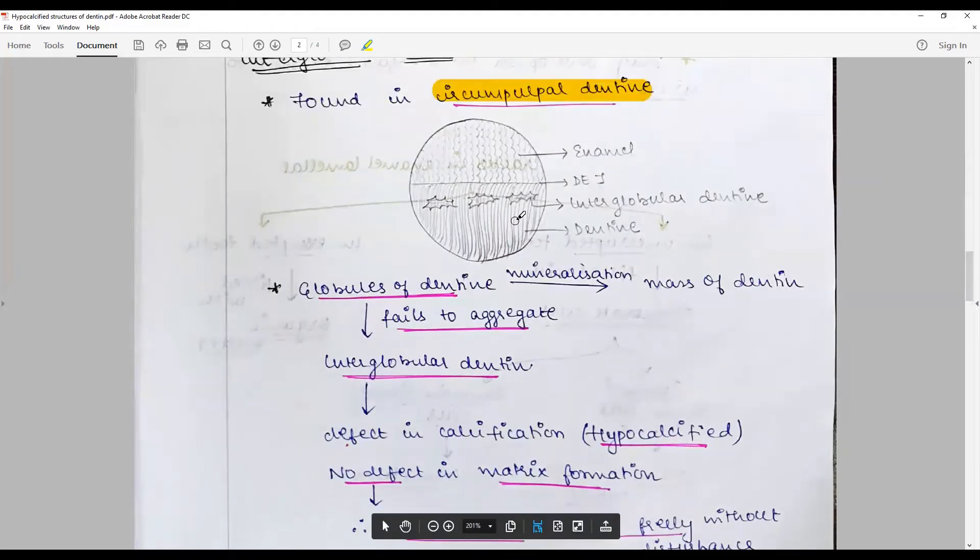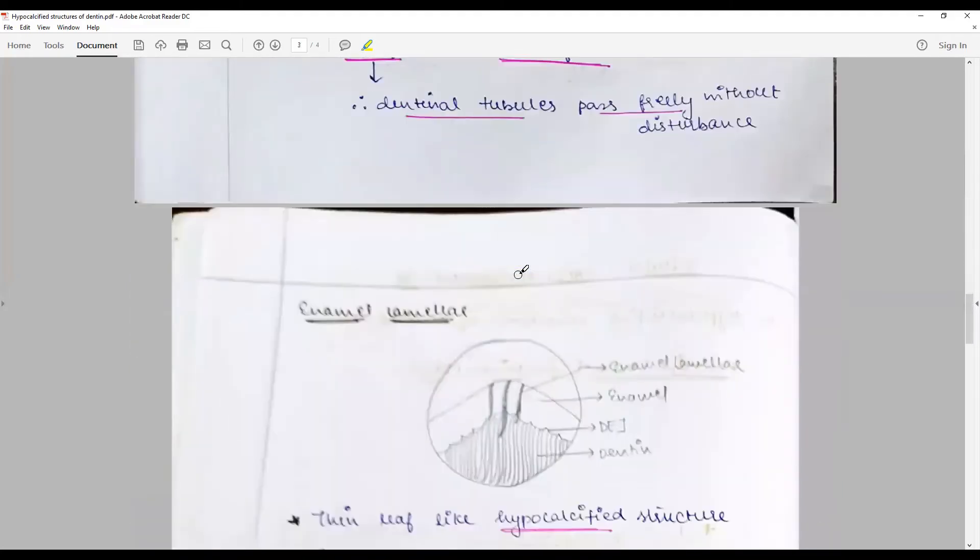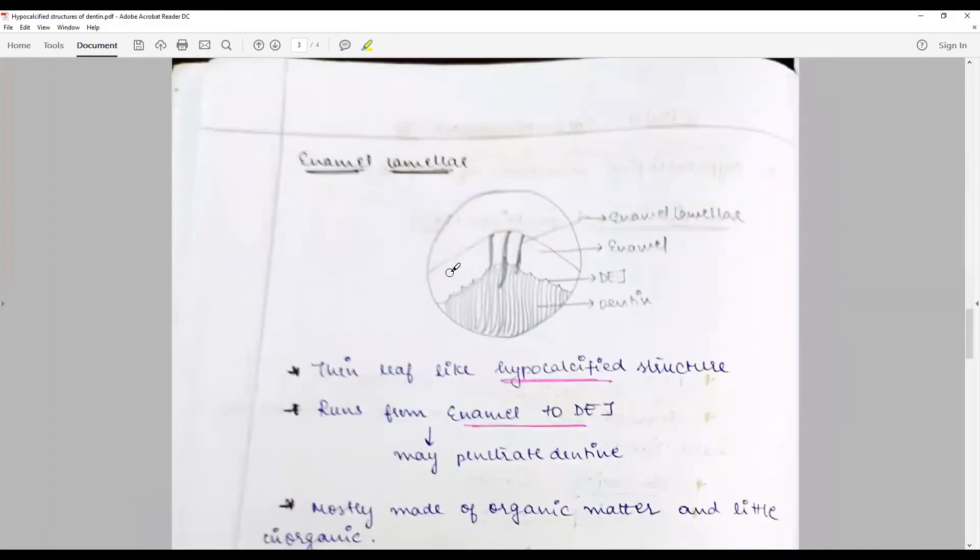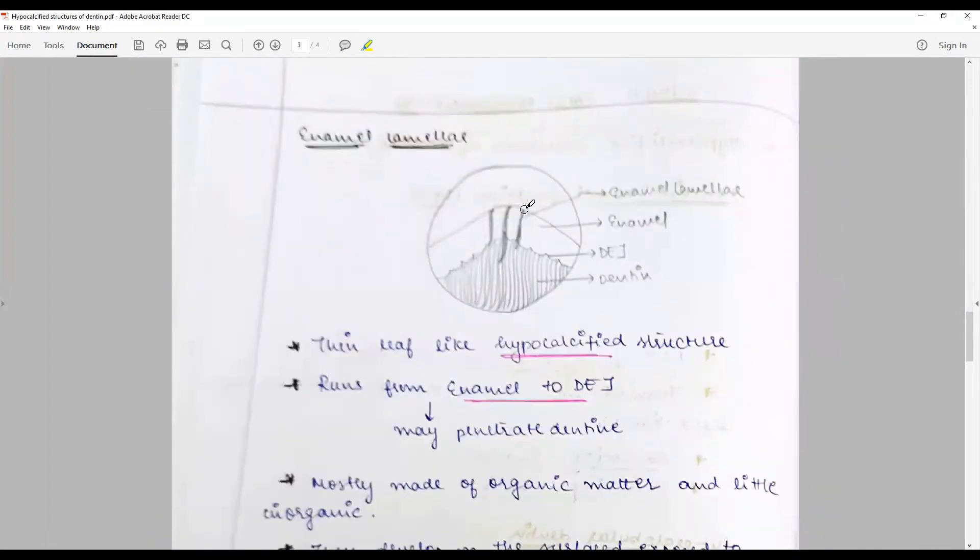Enamel lamellae are thin leaf-like hypocalcified structures extending from the surface of enamel into varying depth across to the dentin.